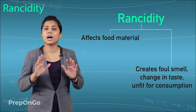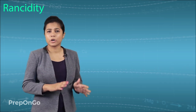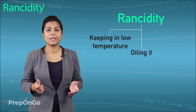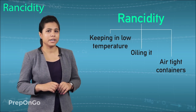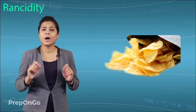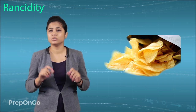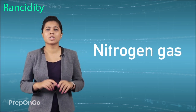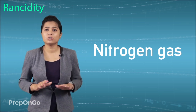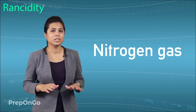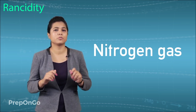It makes the food unfit for consumption. We can protect the food from rancidity by keeping it at low temperatures, oiling it, or keeping it in airtight containers. But one question should strike your mind right now — why do the potato chips in packets not get rancid? The answer is that the packet is flushed with nitrogen gas. This nitrogen cuts the supply of oxygen which reaches the potato chips, hence protecting them from getting rancid.